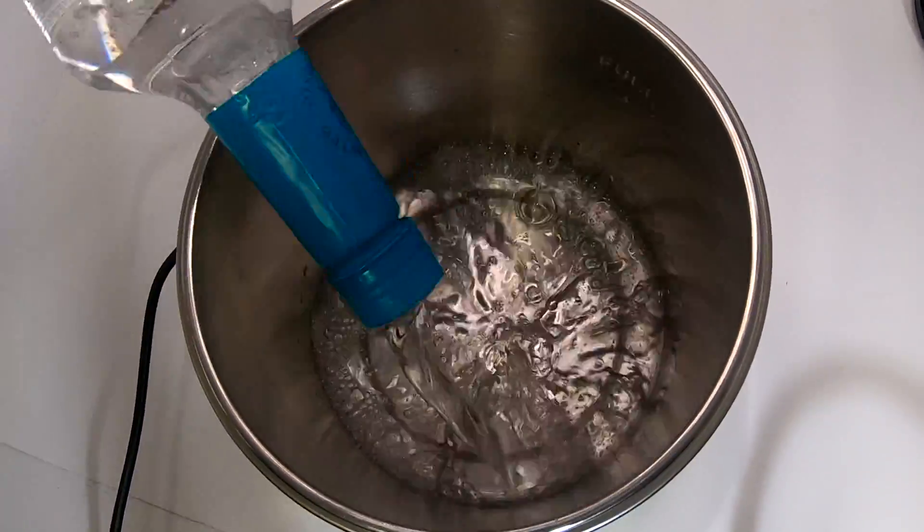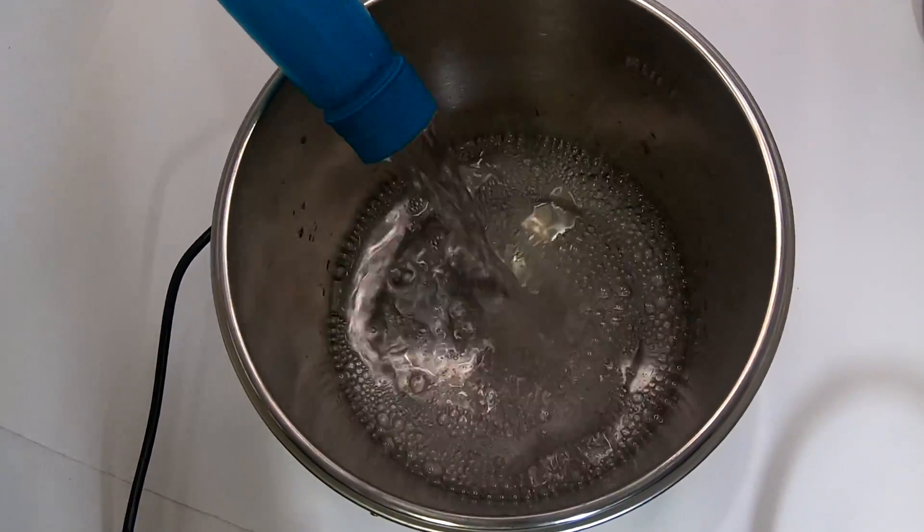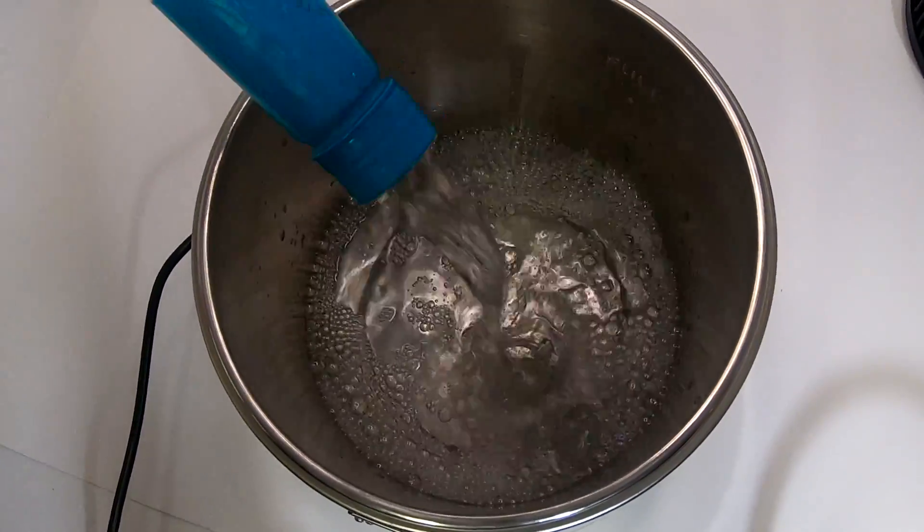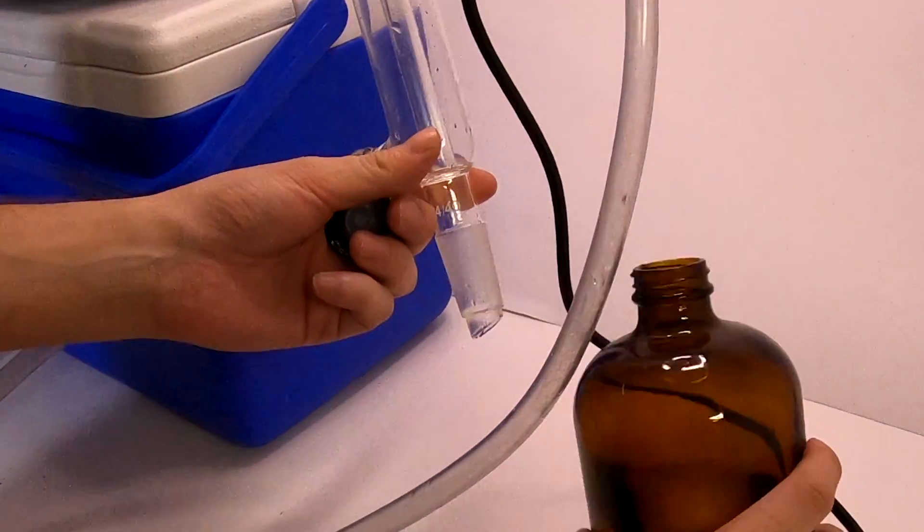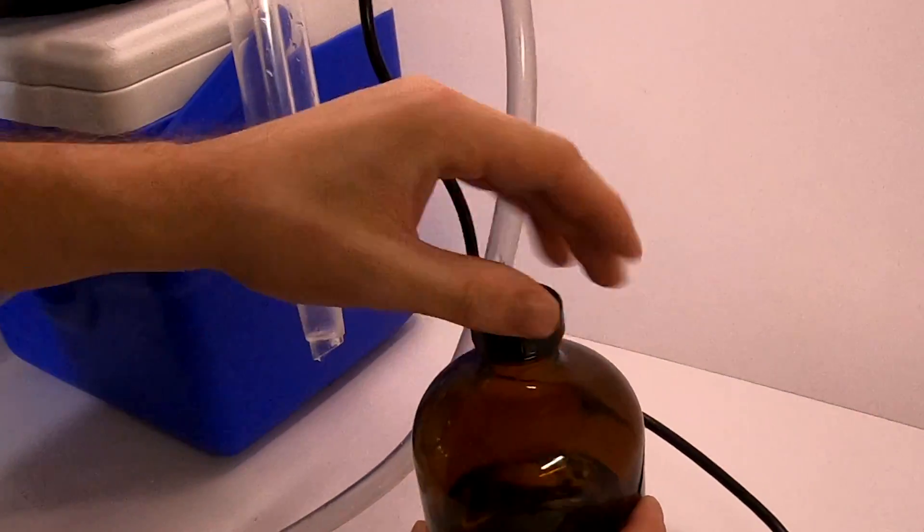Pour your alcohol into the distiller and turn it on at 95 degrees celsius. It'll take about an hour and when it's done be sure to turn off your condenser's pump first so you don't accidentally make a mess with the water.